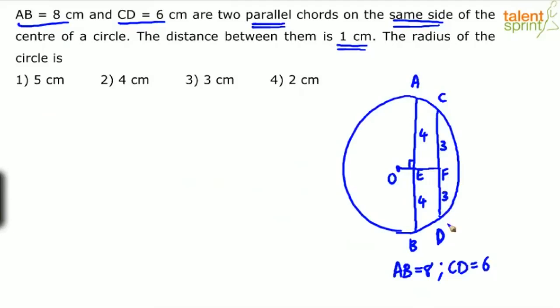This is a very important property based on dropping a perpendicular from the center on a chord. And what else we know? EF is equal to 1 centimeter. The distance between the two chords is 1 centimeter.